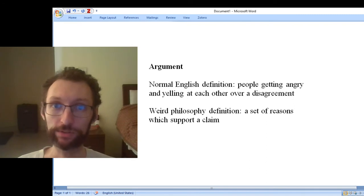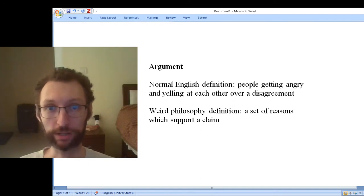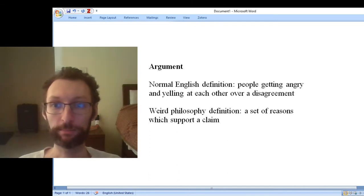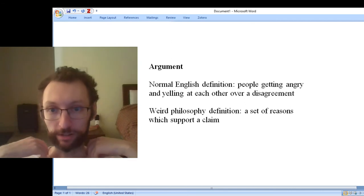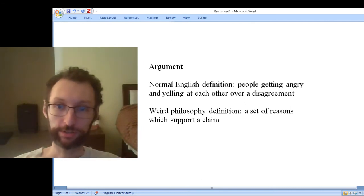In philosophy, we use the word argument to talk about giving reasons to support one or more claims. For instance, if I claim that I'm wearing a white shirt right now, I can give an argument for this claim by saying, look, you can clearly see this white shirt. You can touch the shirt. The colors don't look off or anything in the video. That's an argument for thinking I have a white shirt.